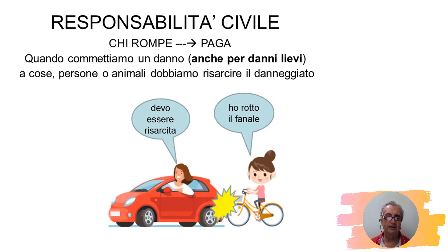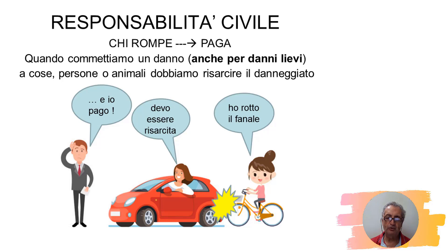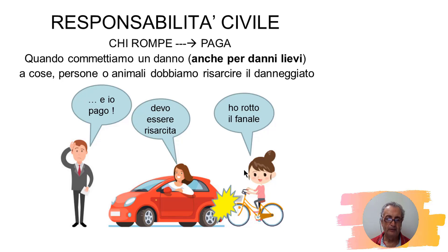Esempio classico: mia figlia stava camminando con la bici, ha urtato una macchina e ha rotto il fanalino. La signora chiede di essere risarcita. Ma mia figlia dice che non ha soldi, quindi pago io. Nel campo della circolazione, chi ha causato il danno civile è il conducente, ma se il conducente non è in grado di pagare o non è identificato, pagherà il proprietario del veicolo.